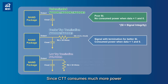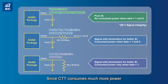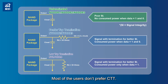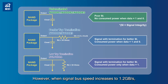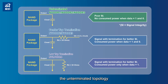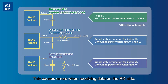Since CTT consumes much more power than unterminated schemes, most users don't prefer CTT. However, when signal bus speed increases to 1.2 GB/s, the unterminated topology will start to distort the signal waveform, causing errors when receiving data on the receiver side.